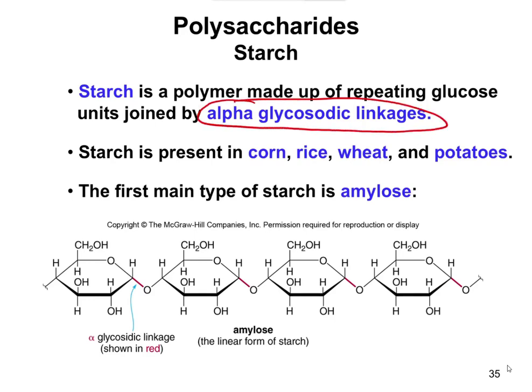With alpha-glycosidic linkages, it's the same general idea — here's our glycosidic linkage — but notice this time the H is up and the O is pointing down, which makes it an alpha-glycosidic linkage. Starch is present in corn, rice, wheat, and potatoes. There are actually two different types: amylose, which is the linear form, and on the next slide we'll look at amylopectin, which is basically the same idea except it's branched.